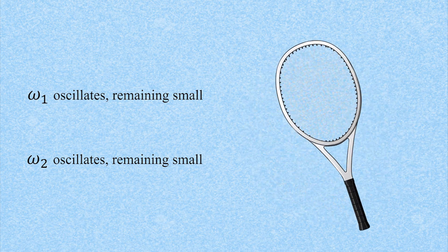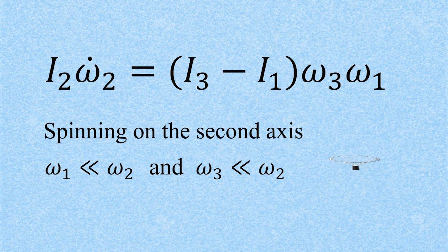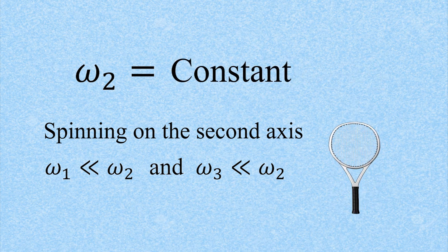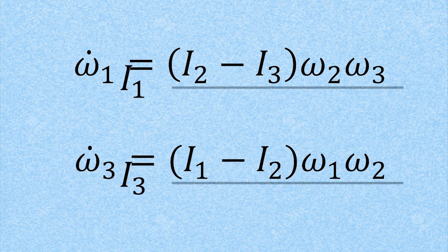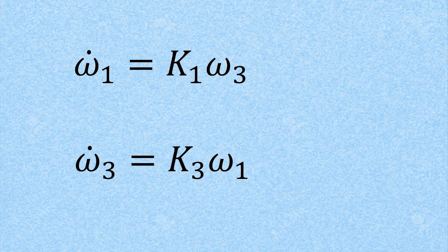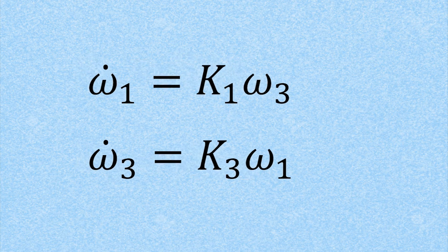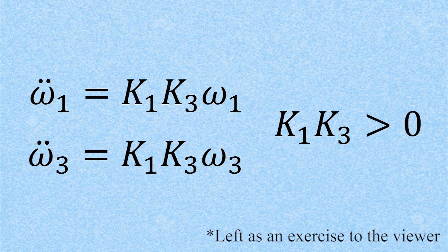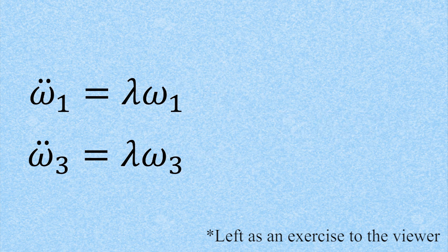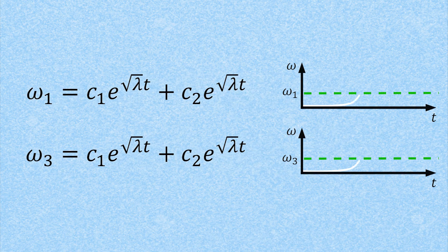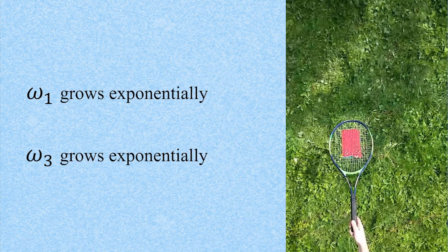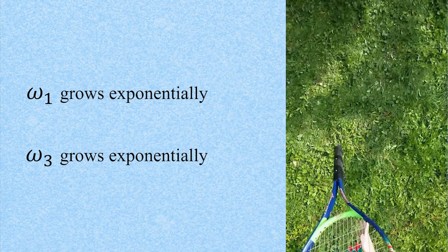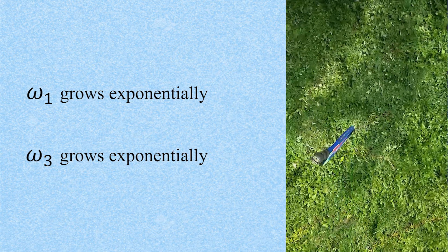By the same method, we can see that this reasoning applies to the third axis, explaining why both rotations are stable. Now let's look at what happens when the racket spins on the second axis. Initially, we assume the angular velocities on the first and third axis are negligible. Following this, we can determine that omega-2 is constant, and we arrive at an expression for the time derivative of omega, where the uppercase K groups all the constants together. Deriving again with respect to time, we see that k1 times k3 is always greater than zero — and this is where the imbalance lies. When we solve for omega, the resulting equation is exponential. This means the angular velocities on both the first and third axis will grow exponentially until they're large enough to cause rotations. That is the cause of the intermediate axis theorem.